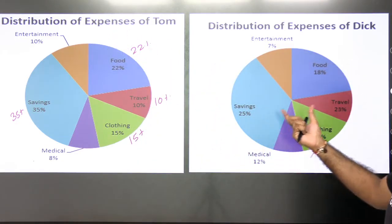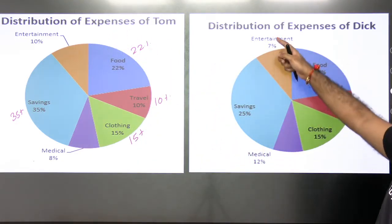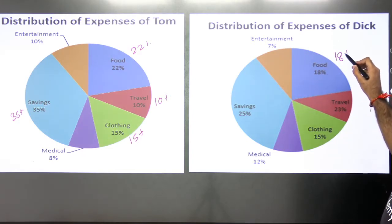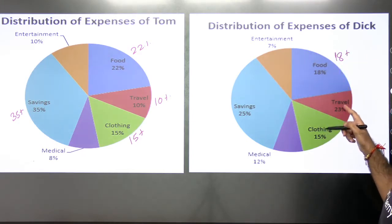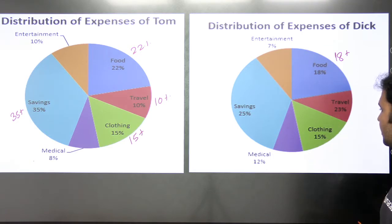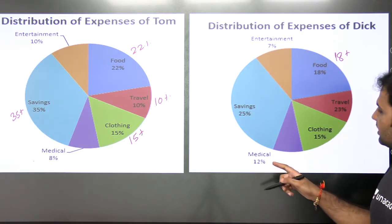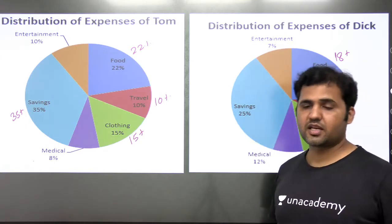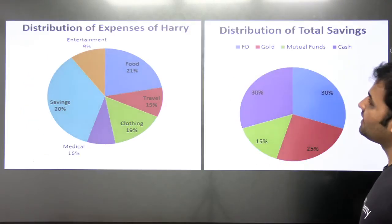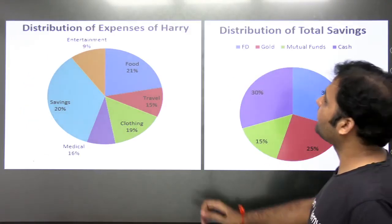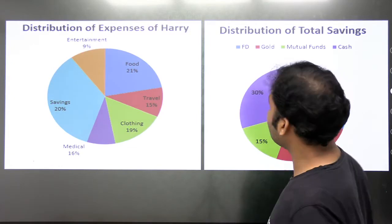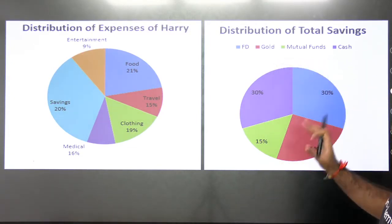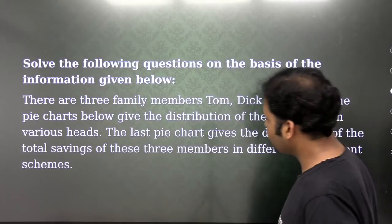Similarly, you have the distribution of expenses of Dick: 7% on entertainment, 18% on food, 23% on travel, 15% on clothing, 12% on medical, and 25% on saving. And similarly you have the distribution of expenses of Harry. This fourth chart is the distribution of total savings.